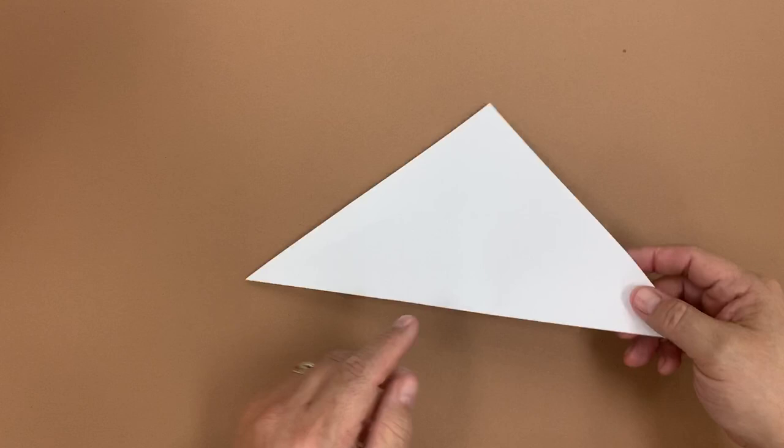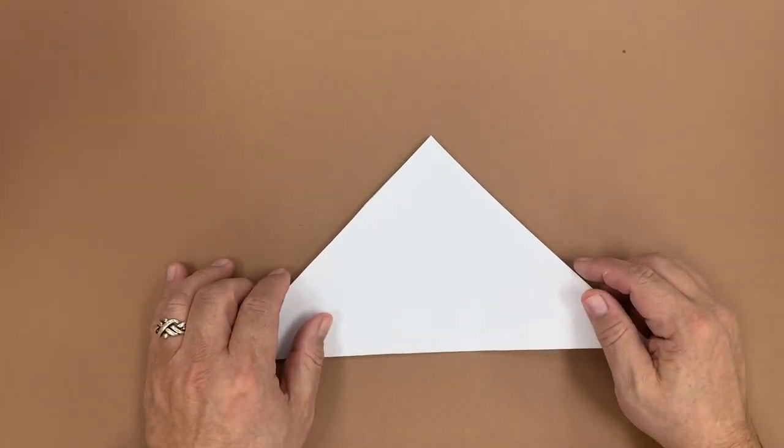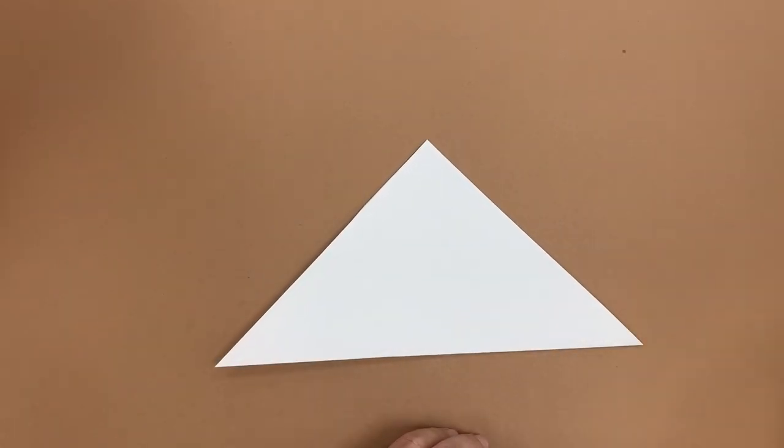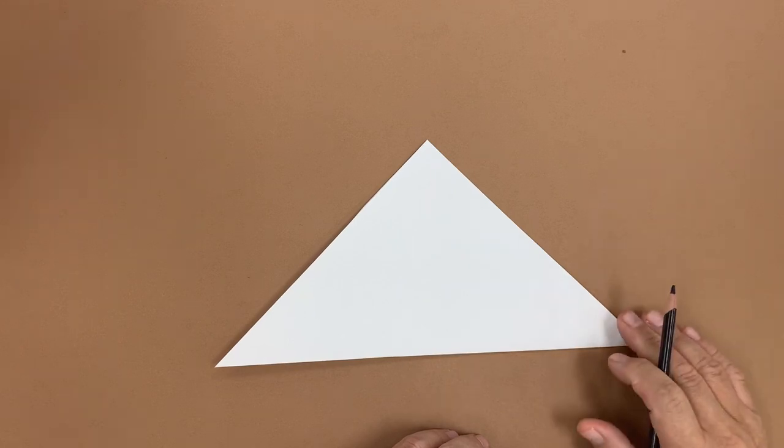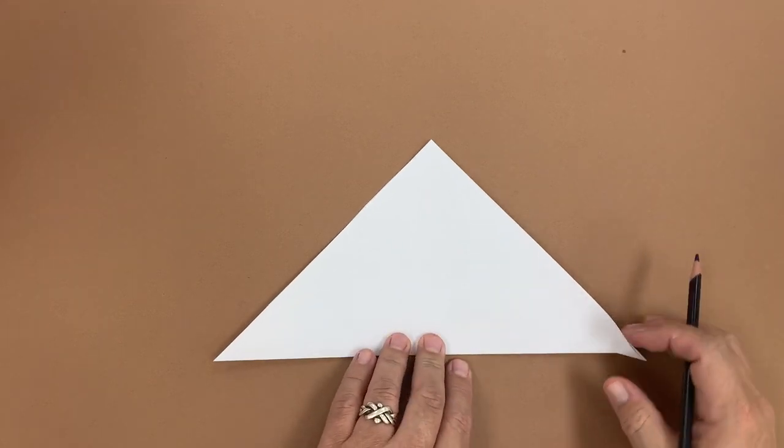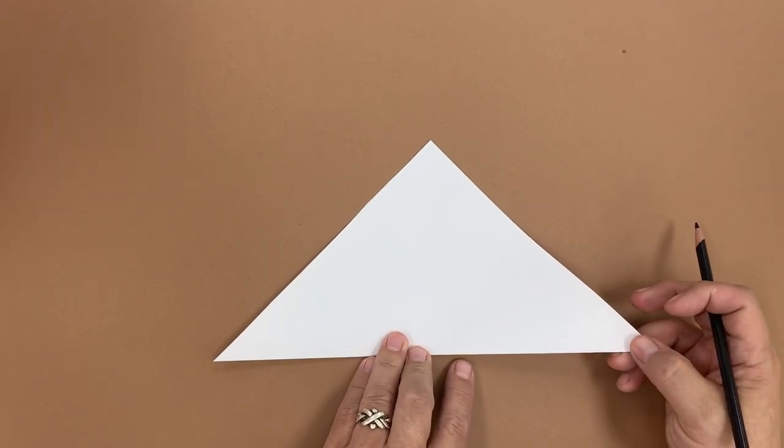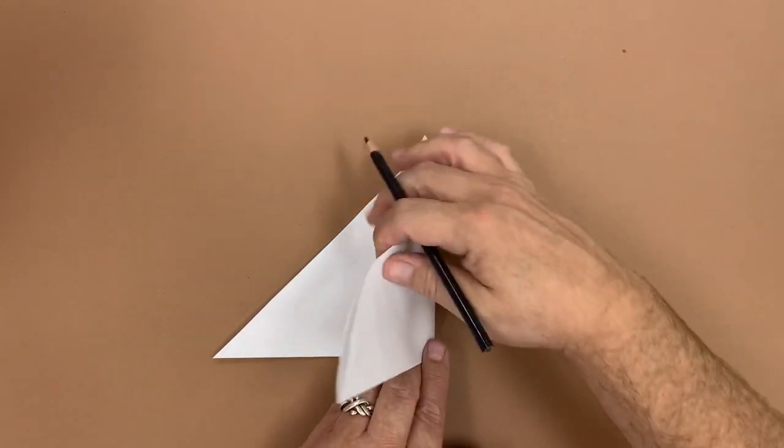Don't need that. So we've got our triangle folded in half, and now we need to make our three reference points in order to fold this into sixths. So first thing we do is fold it in half.